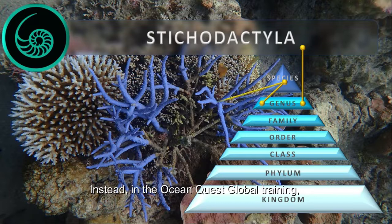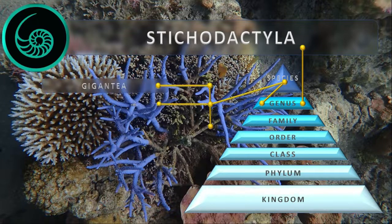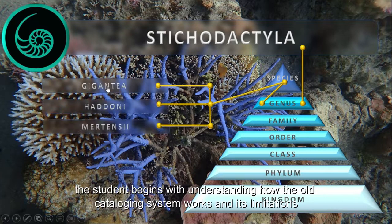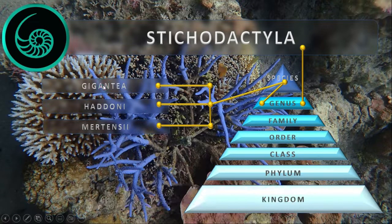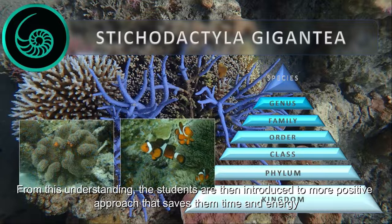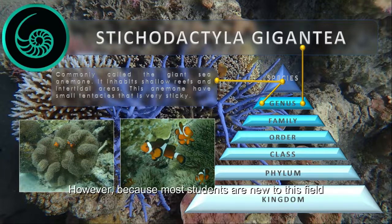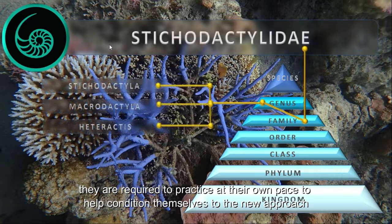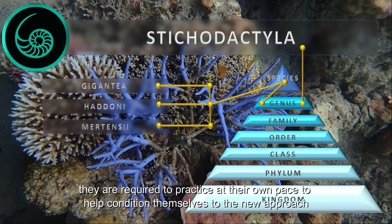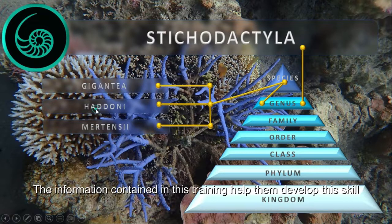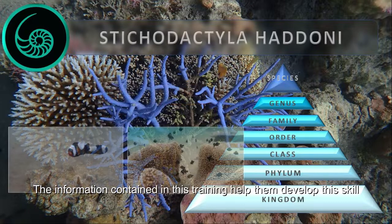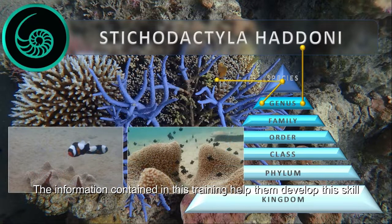Instead, in the OceanQuest Global training, the student begins with understanding how the old cataloging system works and its limitations. From this understanding, students are then introduced to a more positive approach that saves them time and energy. However, because most students are new to this field, they are required to practice at their own pace to help condition themselves for the new approach. The information contained in this training helps them develop this skill.